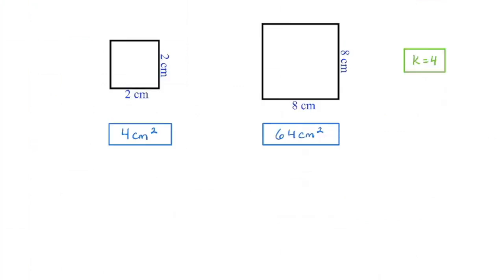Let's take a look at another example. We can see that we have 2 squares because the side lengths are the same. If I take the side length and square it, on my original square I have an area of 4 square centimeters. On my new square — a similar figure — I have an area of 64 square centimeters.